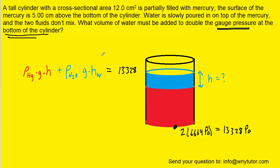We already know the mercury term was 6,664 pascals. For the density of water, we look that up in the table: 1.0 × 10³ kilograms per meter cubed times 9.8. The height of the water is unknown, but we'll find it.